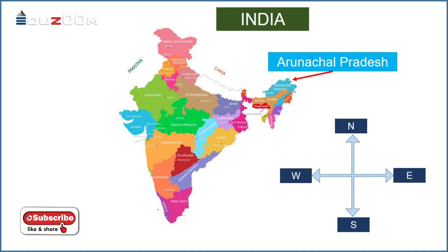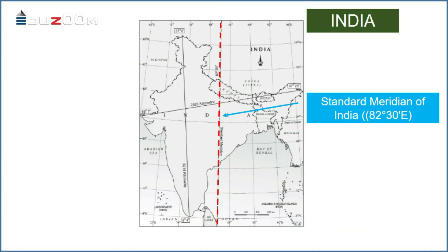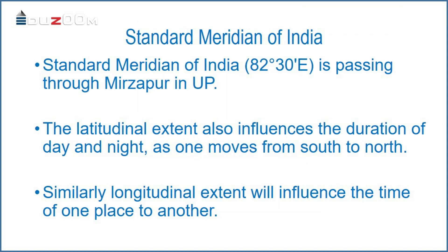From Gujarat to Arunachal Pradesh, there is a time lag of 2 hours. If you look at the map, the standard meridian of India — 82 degrees 30 minutes east longitude — is passing through Mirzapur in Uttar Pradesh. It is considered as the reference point of Indian Standard Time, or IST.